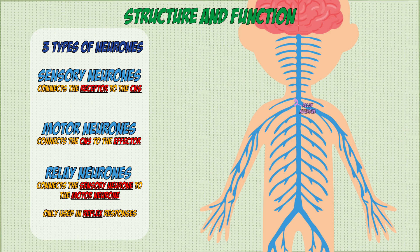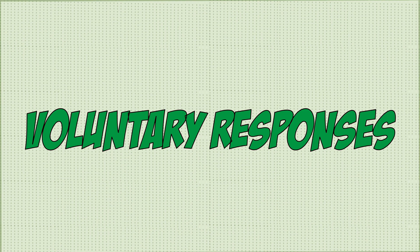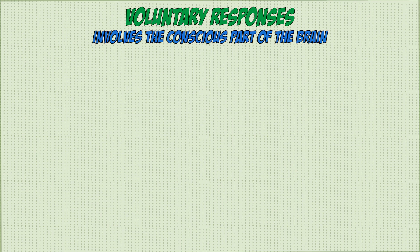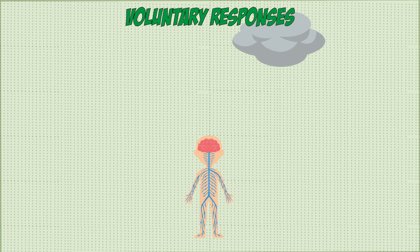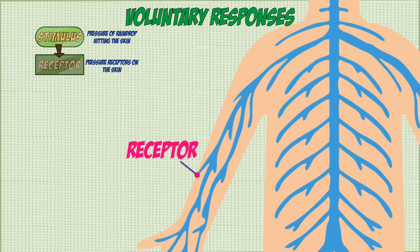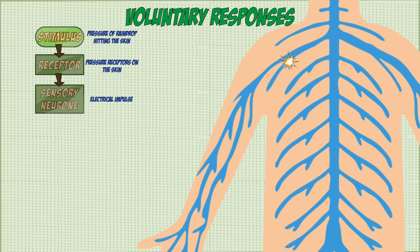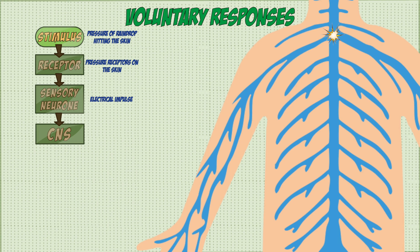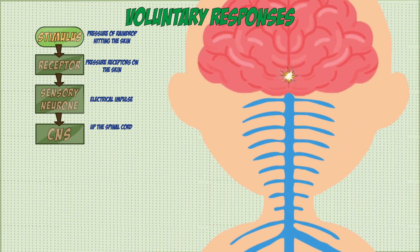A voluntary response is one that involves the conscious part of the brain, meaning the person is aware of the decision being made and the decision is controlled by the brain. For example, imagine a person walking outside when suddenly a drop of rain lands on their arm. The stimulus is the pressure of the raindrop landing on the skin. This is detected by the pressure receptors in the skin, which send an electrical impulse through the sensory neuron to the central nervous system, traveling up the spinal cord to the brain, which processes the information — in other words, this is when you realize it's raining.